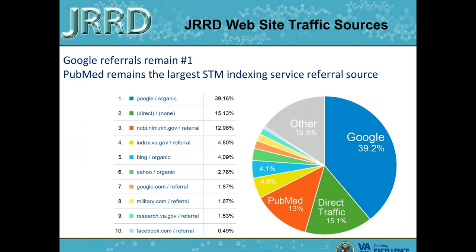JRRD's website traffic sources: Google remains the number one source of all referrals, and PubMed remains the largest second source of referrals of any scientific, technical, and medical journal indexing service. Direct traffic accounts for 15%, and the main VA website which links to us accounts for 4%, up from last year, possibly due to increased exposure. Other alternate search engines round out the top ten.